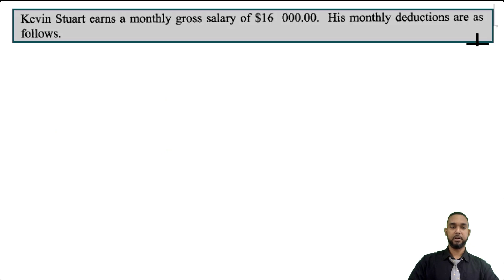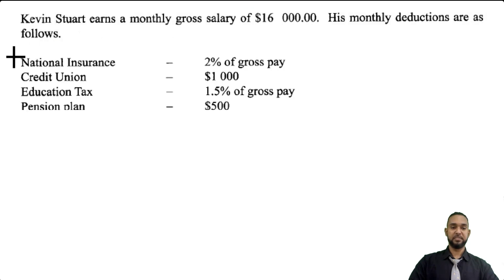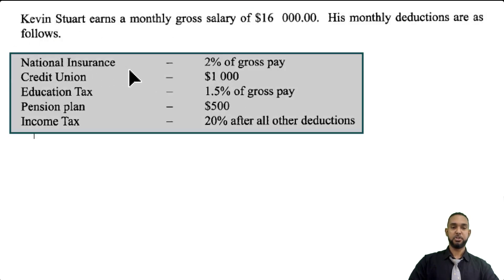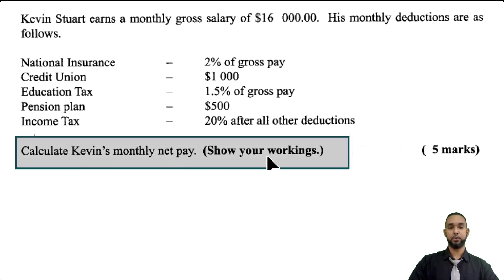Let's take a look at part C. Kevin Stewart earns a monthly gross salary of $16,000 — monthly gross means before any statutory or voluntary deductions are made. His monthly deductions are: national insurance at 2% of gross pay, credit union at $1,000 flat, education tax at 1.5% of gross pay, pension plan at $500 flat, and income tax at 20% after all other deductions. They want us to calculate Kevin's monthly net pay and show our workings.